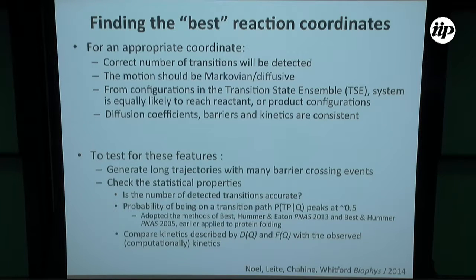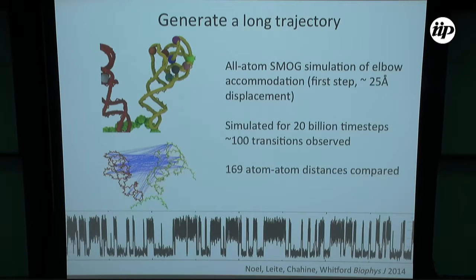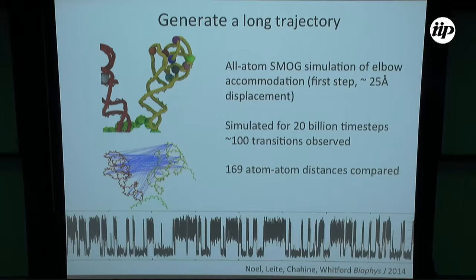When you calculate diffusion coefficients, barriers, and kinetics, they should all be self-consistent with one another. We take these models where we can now generate hundreds of transitions, and start checking these statistical properties and comparing them. By long trajectory — this is a simulation where we looked at just the first step where the tRNA moves about 20 angstroms. This is half of the trajectory, about 50 transitions back and forth. In the end we had about 95 to 105 transitions in this run, so we have enough to start looking at statistics with some certainty.